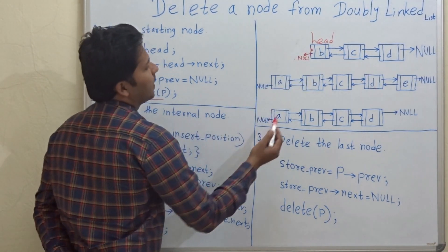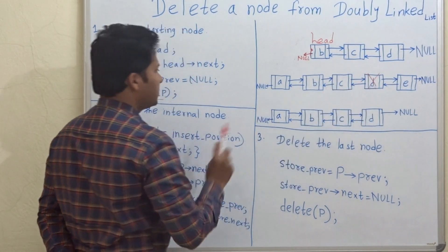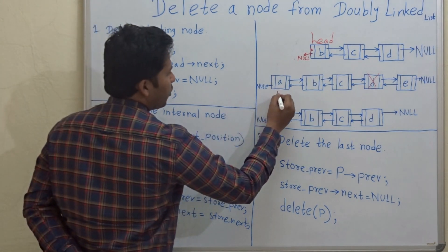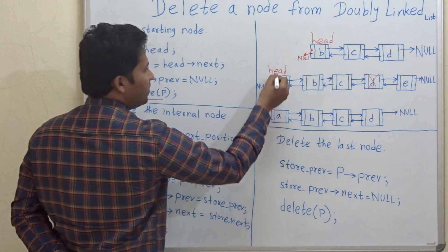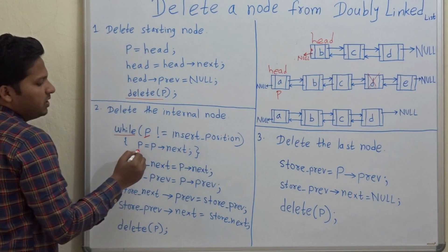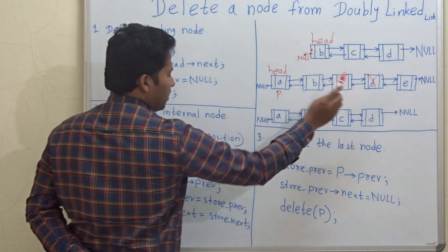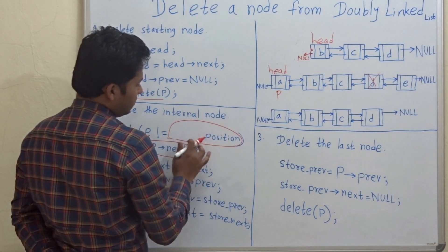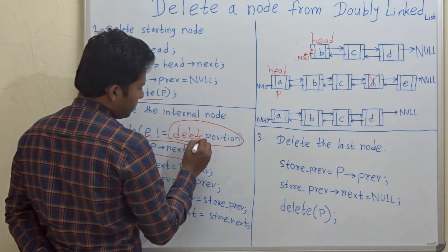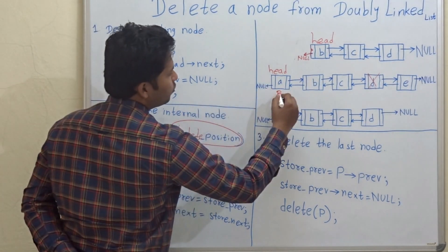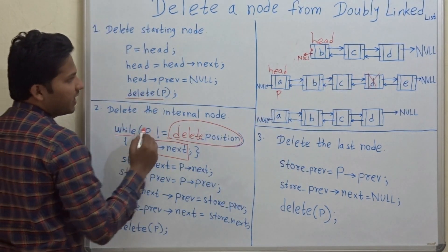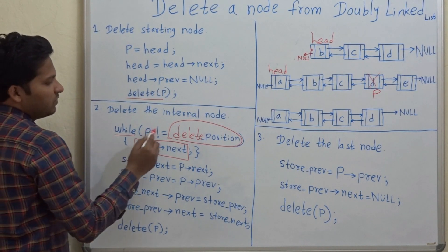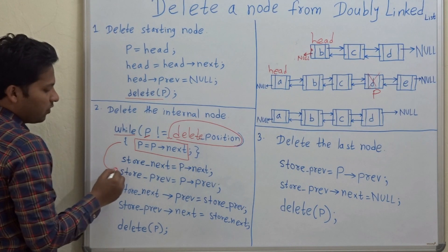Let's go to the second example. Here we want to delete node d, which is somewhere in the middle. Here is the while loop — p initially is pointing to head, the head of this linked list. Now p moves to p->next, so p should move until the position where we want to delete the node, which we can call the delete position. When p reaches the delete position, we stop and come out of the while loop.